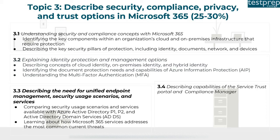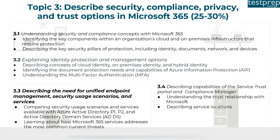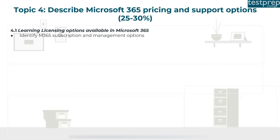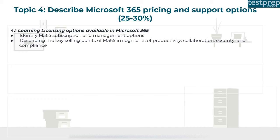Number four: describing capabilities of the Service Trust Portal and Compliance Manager, covering the trust relationship with Microsoft, describing service locations, and explaining how to address common cloud adoption issues. Topic four covers Microsoft 365 pricing and support options. Number one: learning licensing options, including identifying M365 subscription and management options.